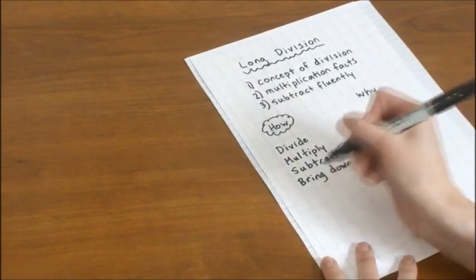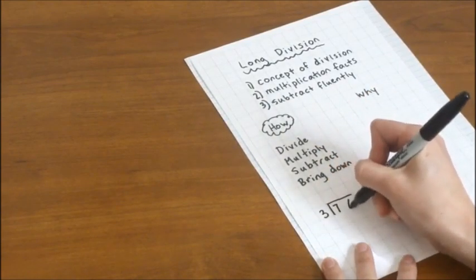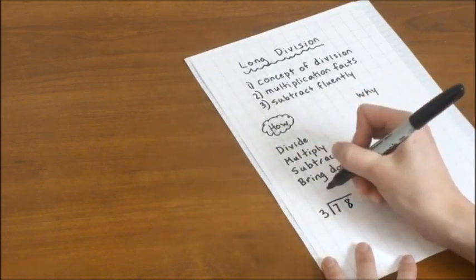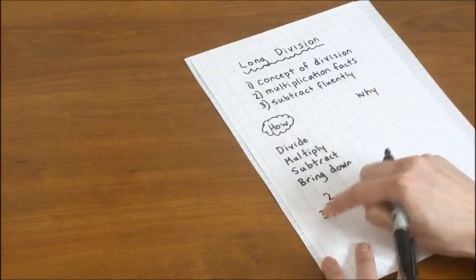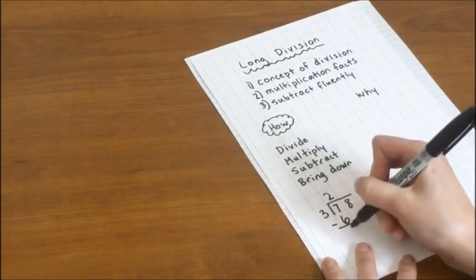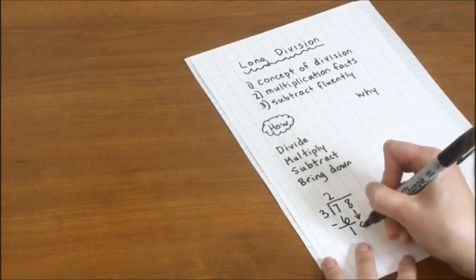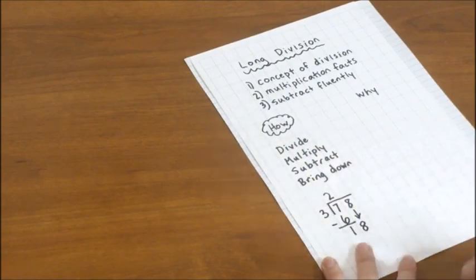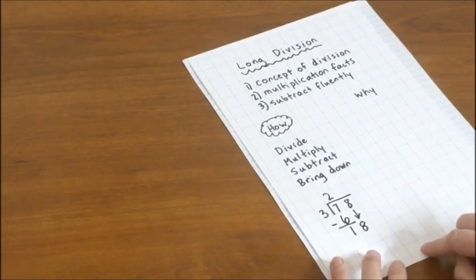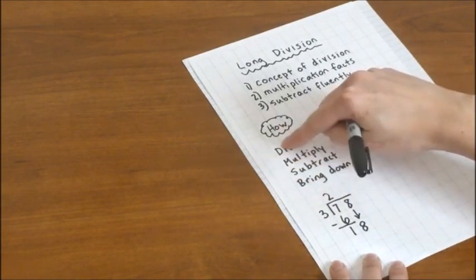So to do this, let's say we have a problem like 78 divided by 3. So first we divide the tens. 7 divided by 3 equals 2. Then we multiply. 2 times 3 equals 6. Next we subtract. 7 minus 6 equals 1. And last we bring down the 8. And I like to draw a little arrow there so that it's easy to see that it goes straight down. That's why I'm using this nice grid paper to make it easy to keep track of all those. So now that we've done these four steps, we go back to the beginning and start over.